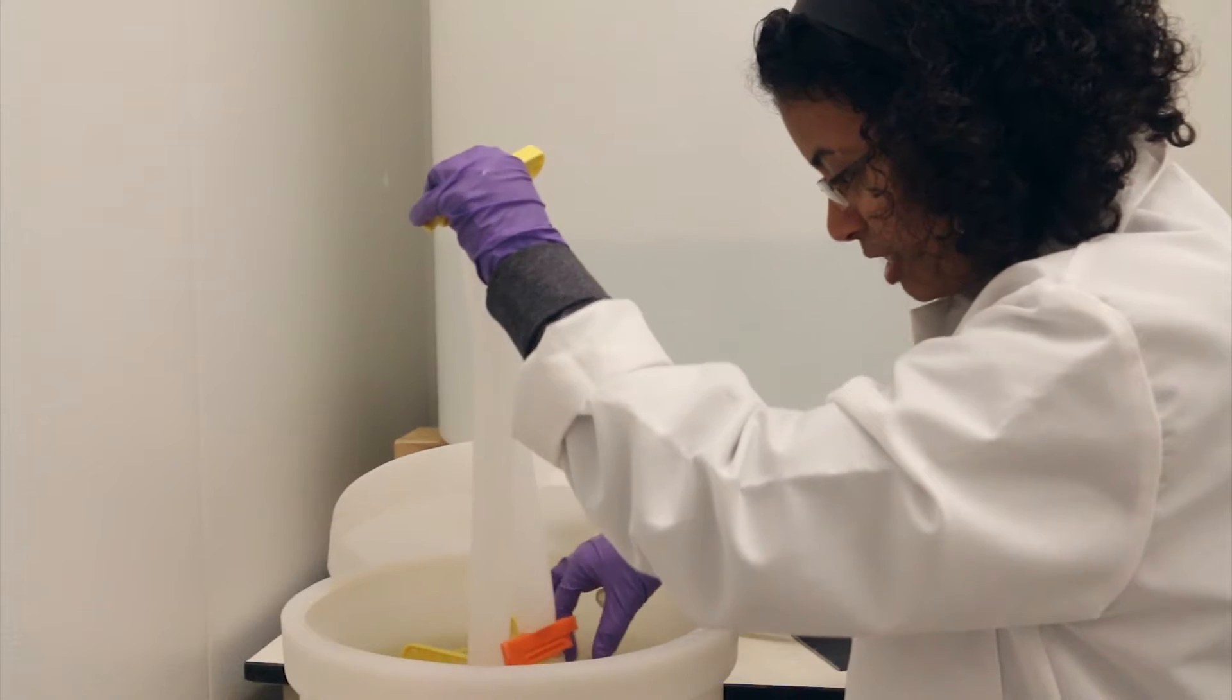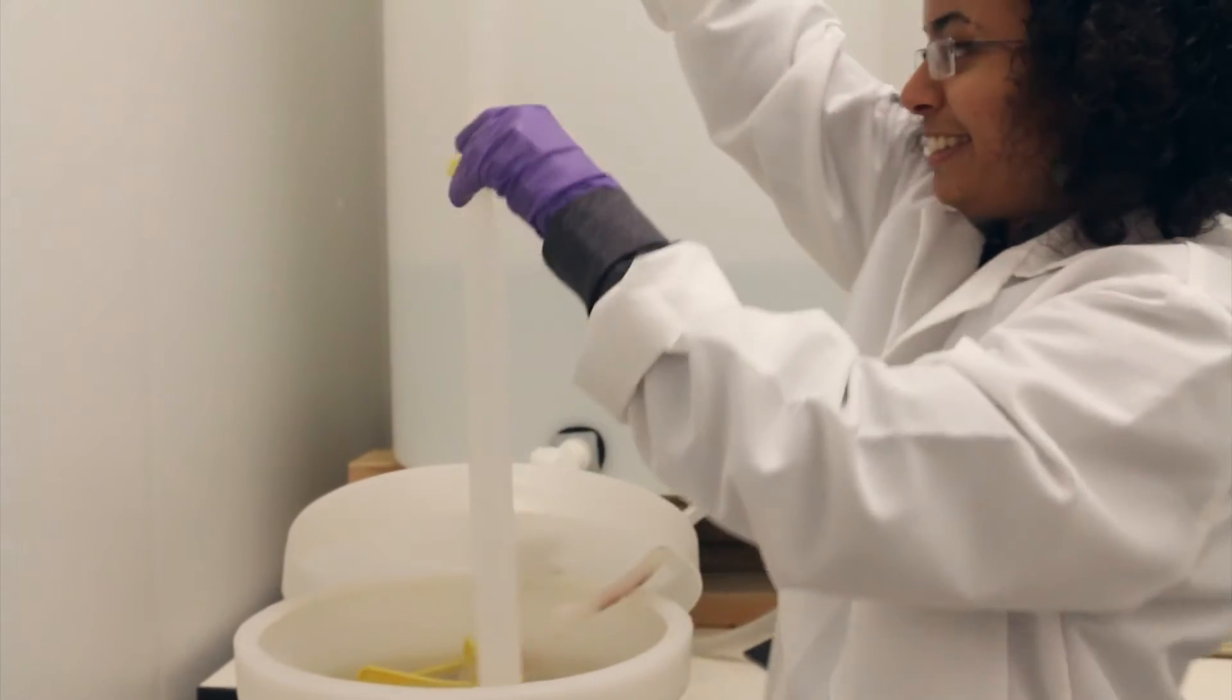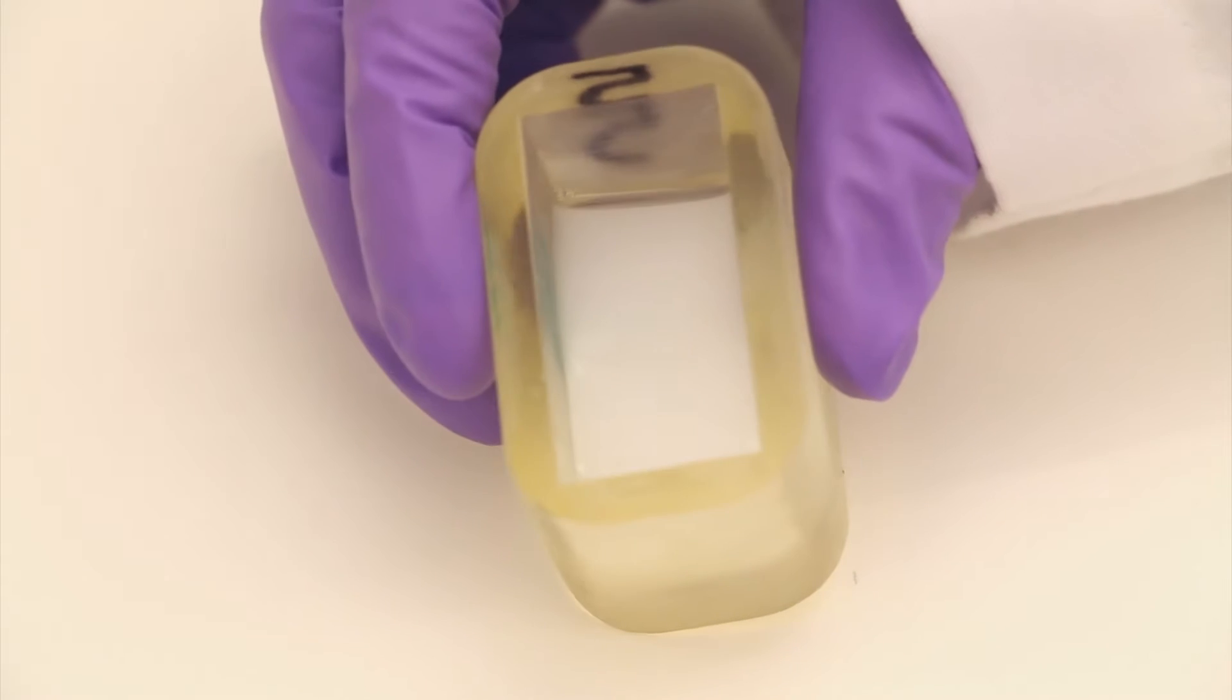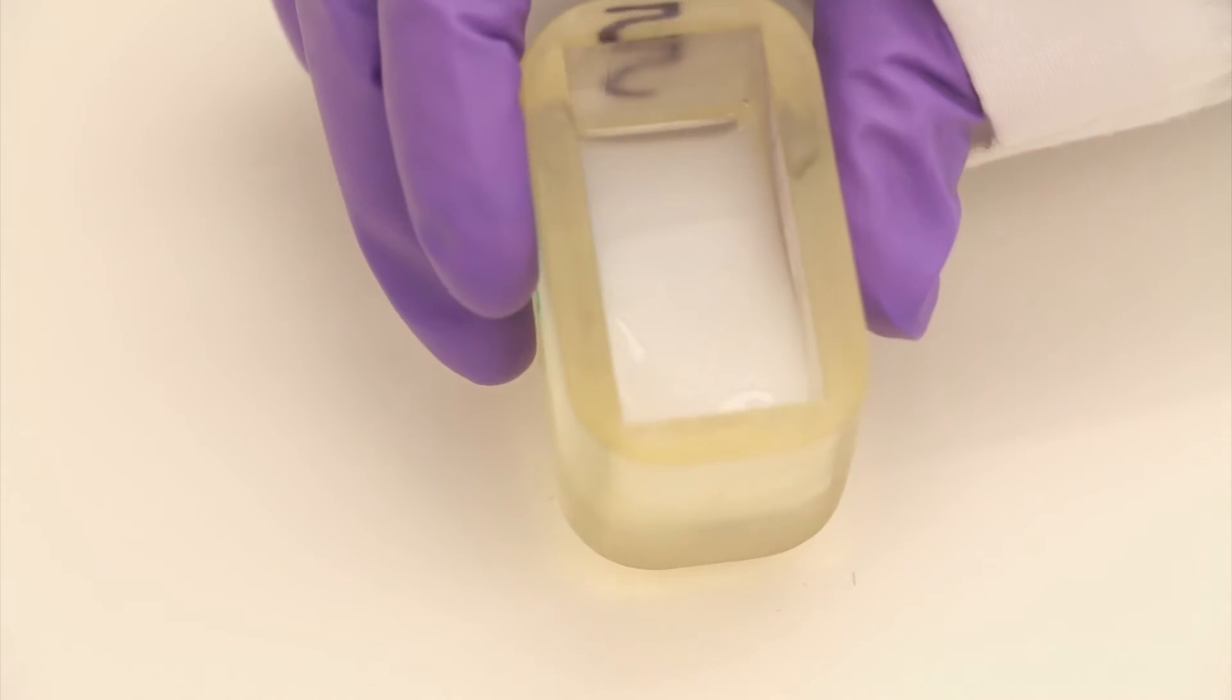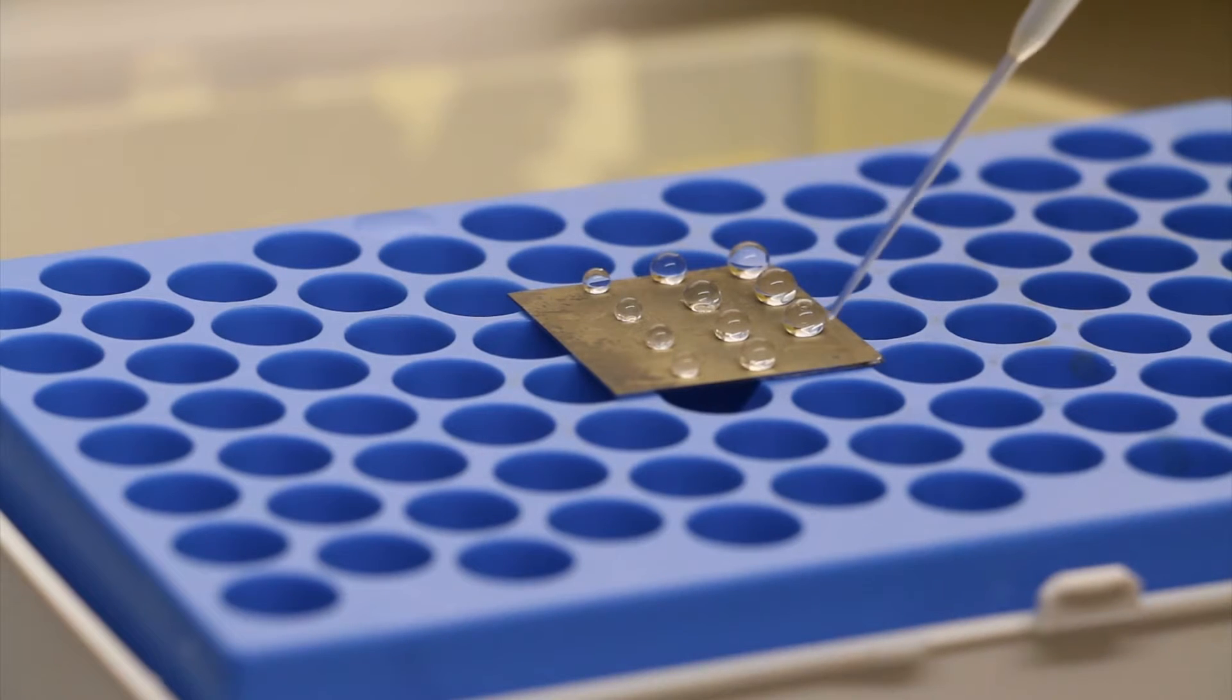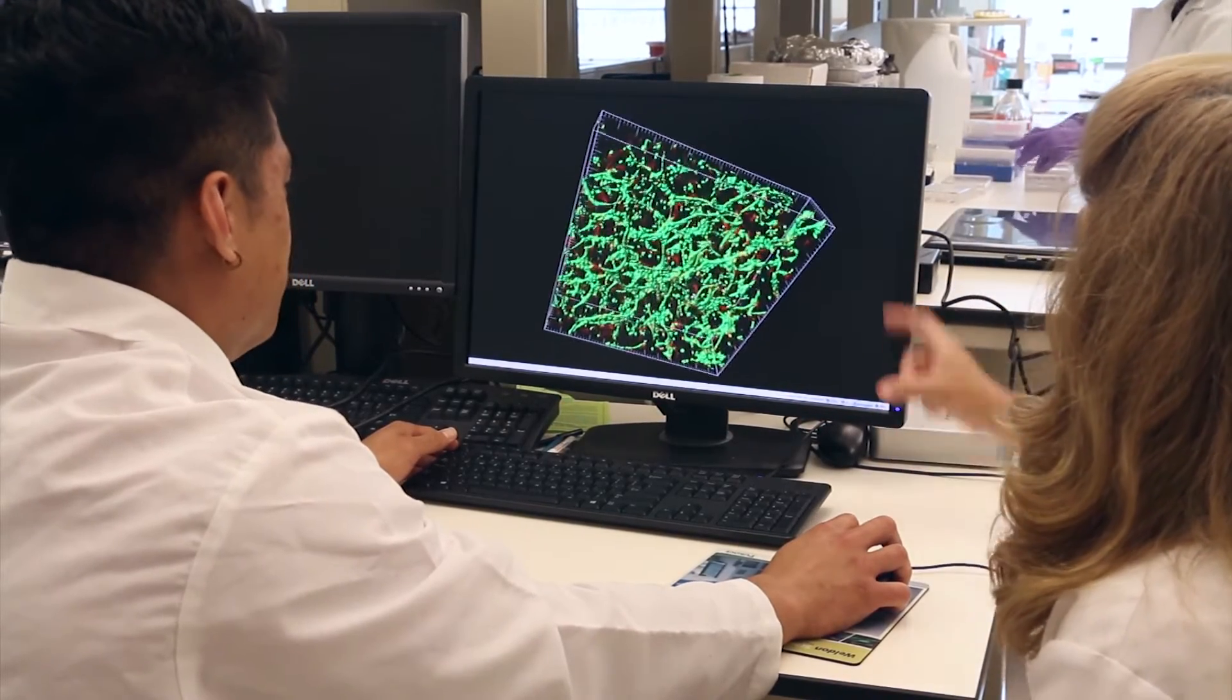Bio-instructive collagen polymers are like the Lego building kit for tissues and organs. They are the fundamental building blocks and they allow you to customize the design of a tissue, bringing the ability to entrap cells and then instruct them down specific lineages.